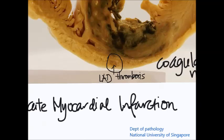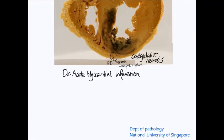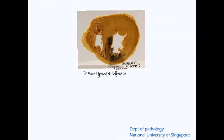The reason for thrombosis is usually due to a ruptured atheroma or ruptured plaque, and therefore the underlying condition would have been atherosclerosis. So the diagnosis in this case is acute myocardial infarction secondary to coronary artery thrombosis.